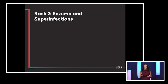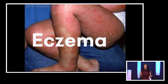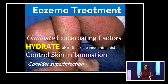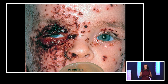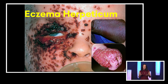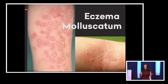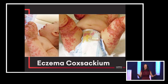The second common rash is eczema and its complications. Eczema is the most common chronic skin condition and we see it all the time in the ED. These kids can be really miserable and itchy. Treatment focuses on minimizing exacerbating factors and treating inflammation, but we also have to look for superinfection. If a child has punched-out hemorrhagic lesions, that's eczema herpeticum — a superinfection with herpes — and we need to treat it with acyclovir. You can also get viral or fungal superinfections, including molluscum or a Coxsackie exacerbation in areas of eczematous skin.